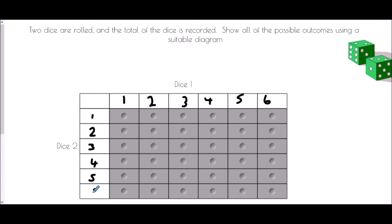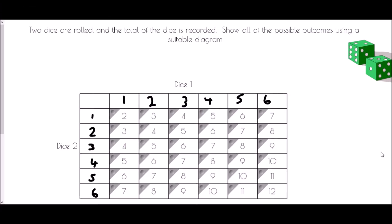All we've been asked to do is find the totals, so we're going to use this as an addition grid. One on the first dice with one on the second dice gives a total of two. Two on the first with one on the second gives three, and so on. We keep adding in exactly the same way. Let's cut to the final table — all of the scores have been added together to show all of the different results.